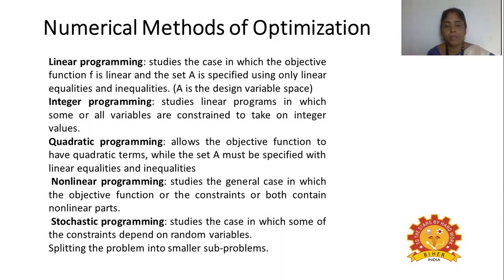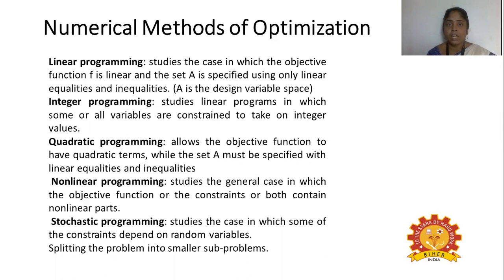The fourth is nonlinear programming, which, as the name indicates, is an optimization programming technique that is not in linear form. It is one in which the objective functions or constraints — or both — contain nonlinear parts of the factors or variables.